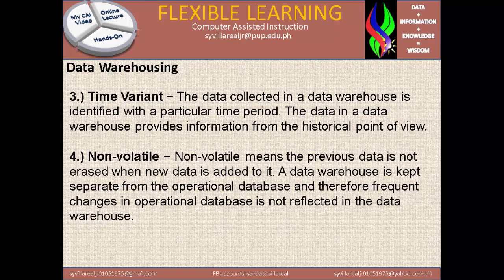For example, at one point in history we may have more employees but lower sales, and at another time we have fewer employees but very high sales. That is what they call the historical point of view. Time variant identifies whether there is a relation between having more employees with low sales versus fewer employees with a high percentage of sales.